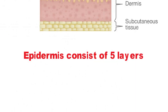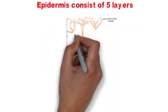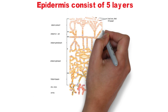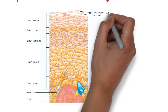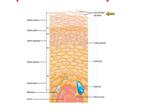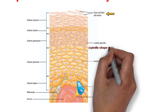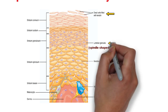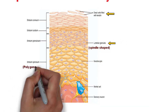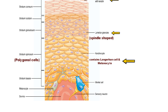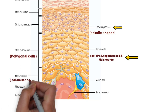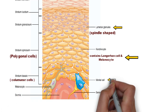Epidermis consists of five layers: stratum corneum, stratum lucidum, stratum granulosum, stratum spinosum, and stratum basale. Stratum corneum is the outermost layer, made up of dead keratinocytes. Stratum granulosum is spindle-shaped and made up of lamellar granules. Stratum spinosum is made up of polygonal cells and consists of Langerhans cells and melanocytes. Stratum basale is the lowermost layer of epidermis, made up of columnar cells and consists of Merkel cells.